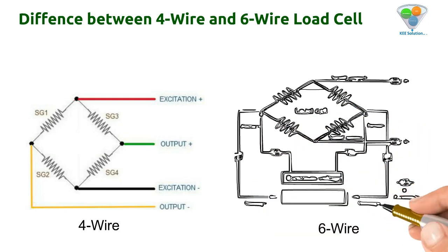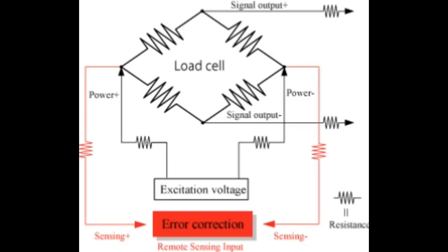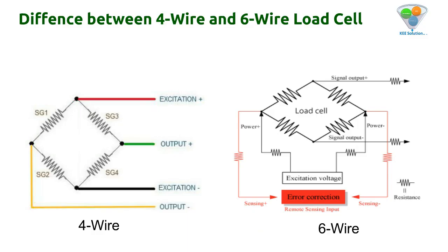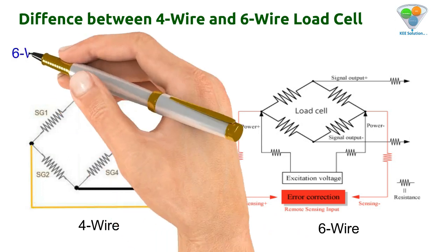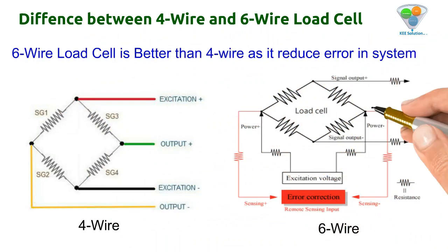The sensing signal reduces error in the circuit. These are the differences between four-wire and six-wire load cells. The six-wire load cell is better than the four-wire as it reduces error in the system.